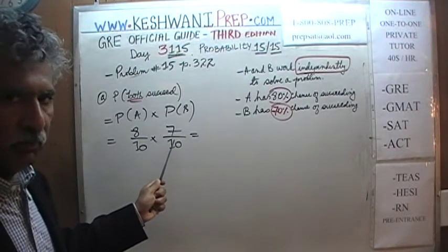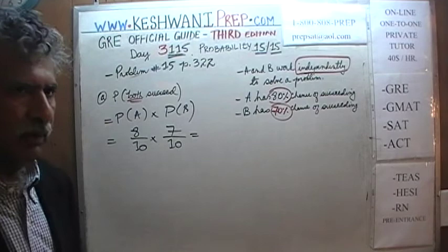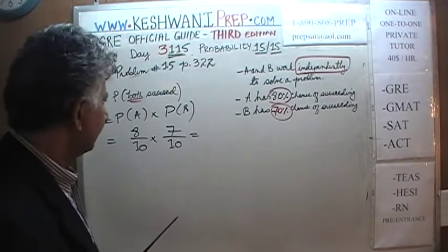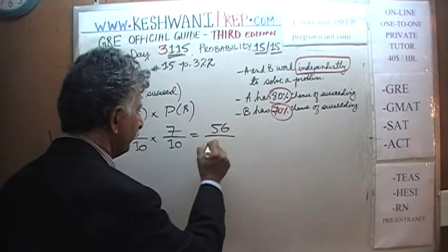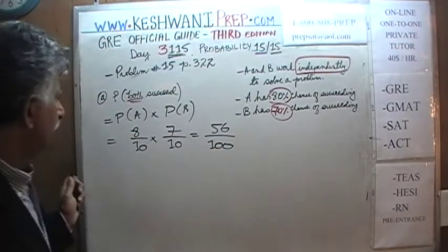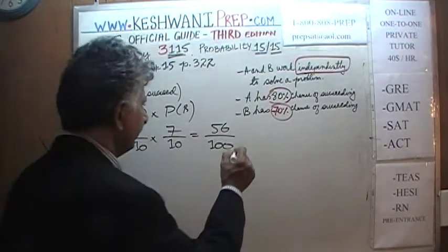7 over 10. If we multiply, 8 times 7 is 56 over 100, which is 56%.